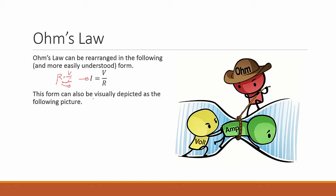This form can also be visually depicted as the following picture. So you see that there are three things: this is actually the R, the resistance, this is the V, and this is the I. This poor person being pushed by V and being held back by R. We'll come back to this picture in the later slides.